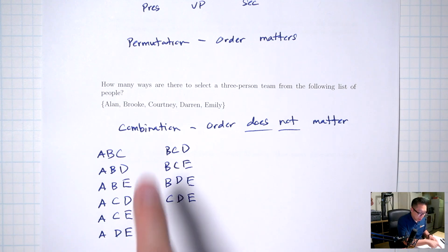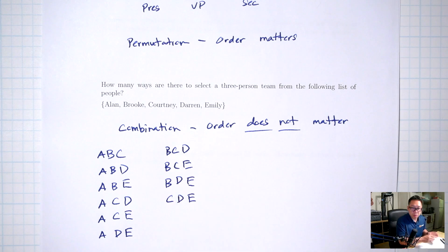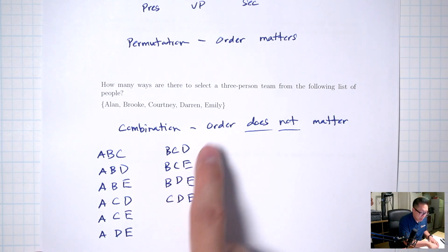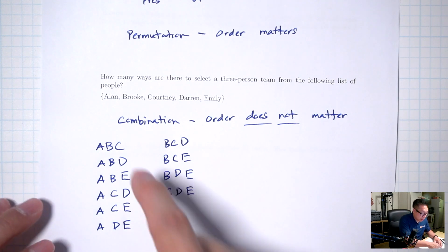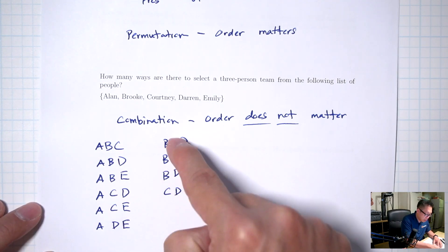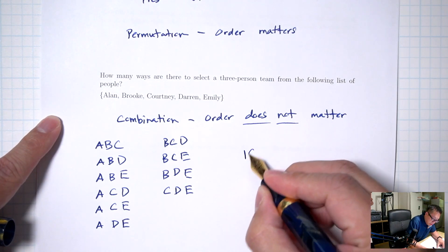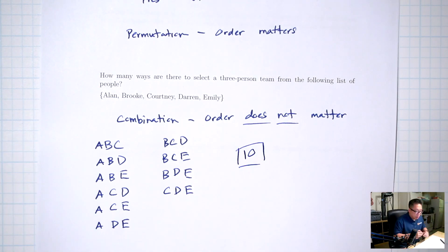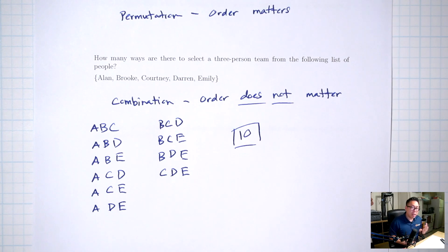What's different about the second scenario? It says how many ways to select a three-person team — no jobs are specified, it's just a three-person team. In the first scenario, if I picked Alan, Brooke, Courtney, that's different from Courtney, Brooke, Alan — because with Alan, Brooke, Courtney, Alan is president, whereas with Courtney, Brooke, Alan, Courtney is president. So those count as two different possibilities.